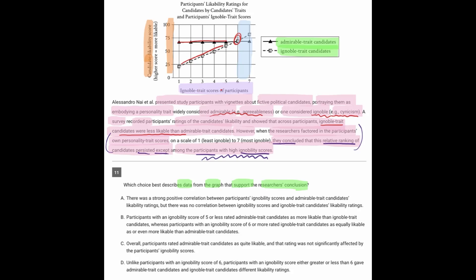the ignoble candidates are less likable than the admirable candidates up until this intersection point and suddenly after that point. Now, that's the point where the participants themselves are not very likable. So once the participants themselves are not likable, those same people actually picked the non-likable candidate as more likable to them above the generally likable candidate. So the graph definitely matches the claim perfectly.